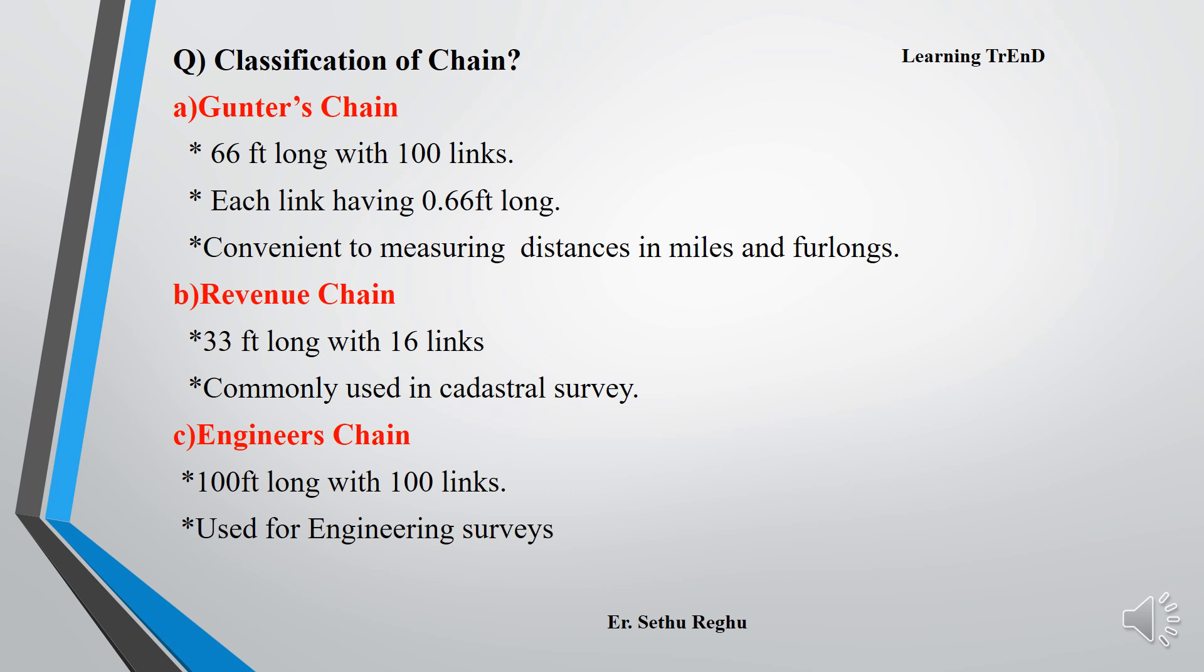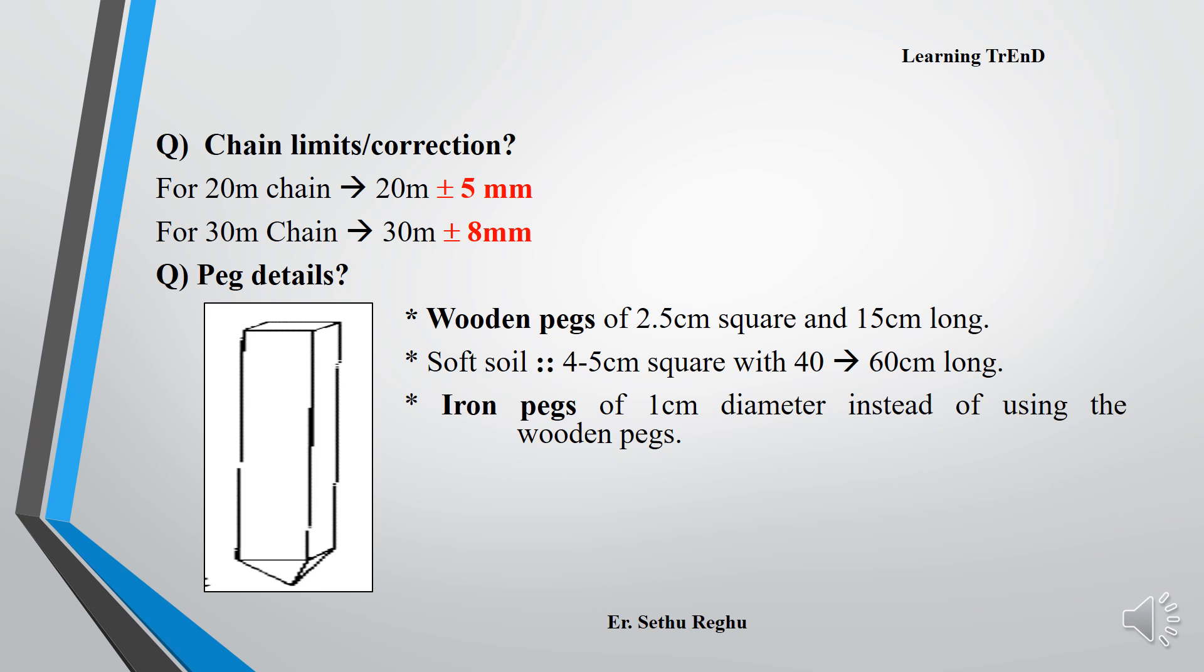Second is revenue chain, which is 33 feet long with 16 links and is commonly used in cadastral surveys. Third is engineer's chain, which is 100 feet long with 100 links and is used for engineering surveys. As per IS 1492-1956, the chain correction for 20 meter chain is 20 meter plus or minus 5 mm. For 30 meter chain, it is 30 meter plus or minus 8 mm.